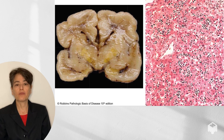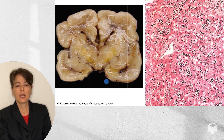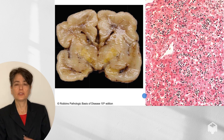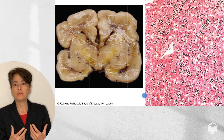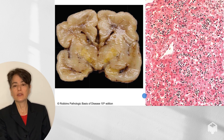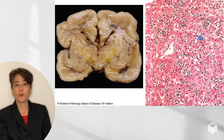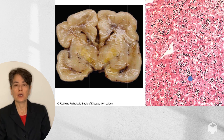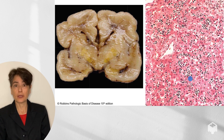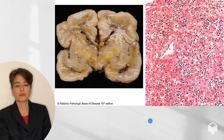Here we can see a fetal brain with yellow discoloration in the basal ganglia — this is kernicterus. It is a subtle finding. Another consequence of significant hemolysis is that the fetus tries to generate as many red cells as possible. This image shows extramedullary hematopoiesis in the liver — these are erythroblasts being frantically generated. This can lead to hepatomegaly and splenomegaly, which are additional findings seen in fetal hydrops.